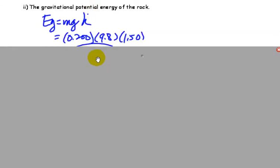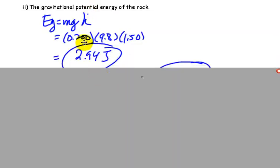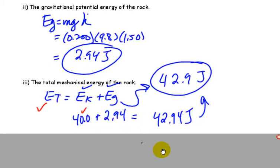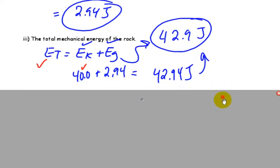Potential energy, again, it's 0.2, 9.8, and 1.5 off the ground, so 2.94 joules. So the total mechanical energy that that rock has consists of kinetic energy and potential energy, 40 plus 2.94, 42.9 is what you get there.